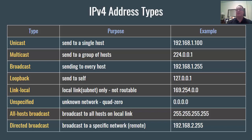In Windows, this is what happens when you don't receive an IP address from your DHCP server — it'll default to a 169.254 address. It's link-local. When it does that in Windows, it's called APIPA, Automatic Private IP Addressing.